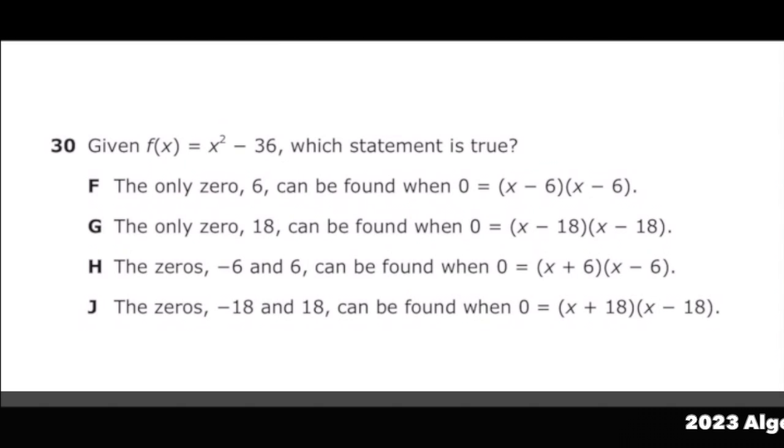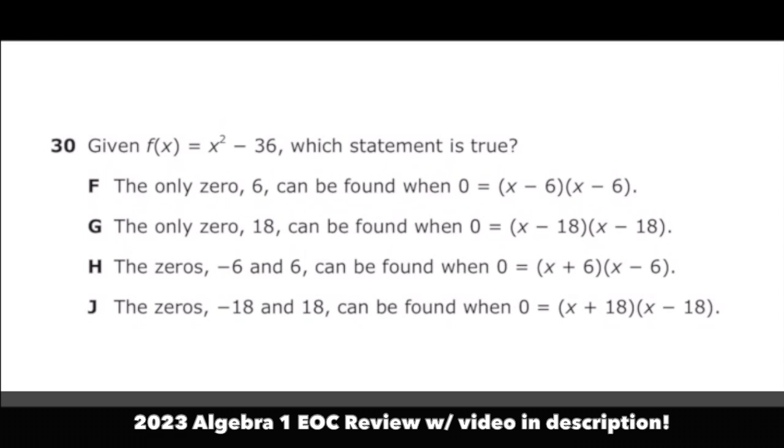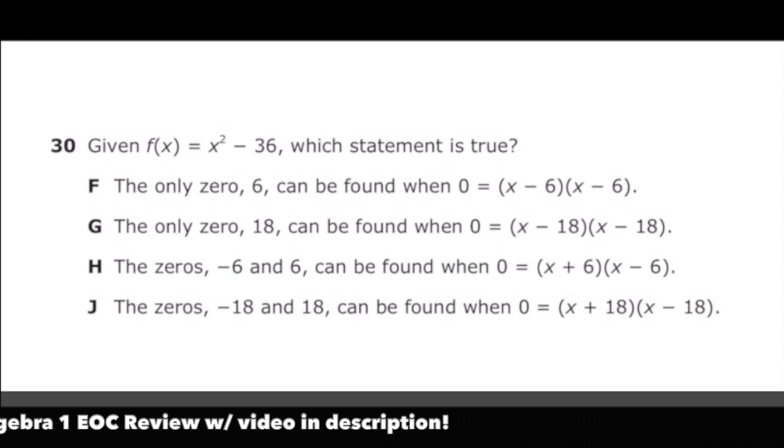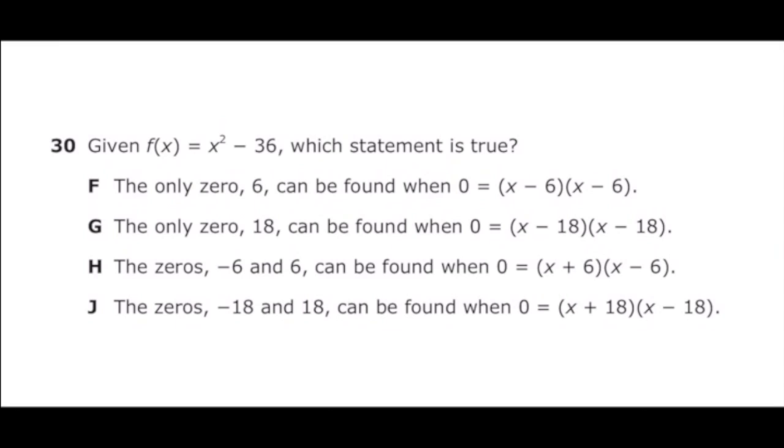This is number 30 from the 2022 Algebra 1 EOC. Given f of x is equal to x squared minus 36, which statement is true? I know that this is a difference of squares and so I'm going to go ahead and write this out in its factored form.